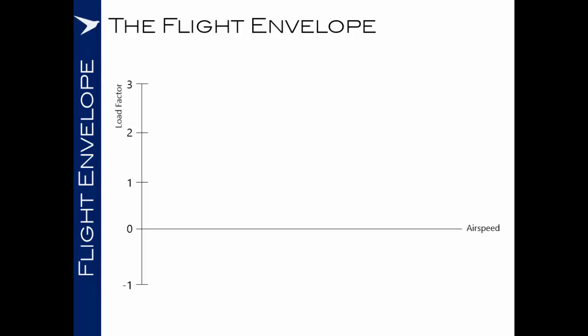The way that we tend to do this is by examining a graph of airspeed versus load factor. Sometimes you may hear this referred to as a V-n diagram, because airspeed is often denoted as V and load factor often denoted as n.